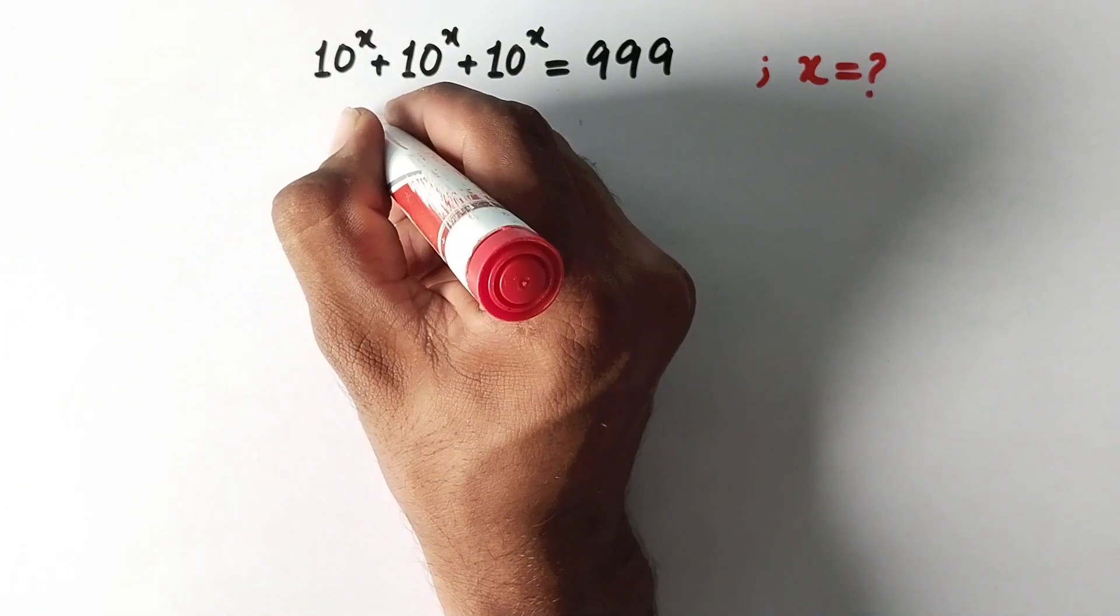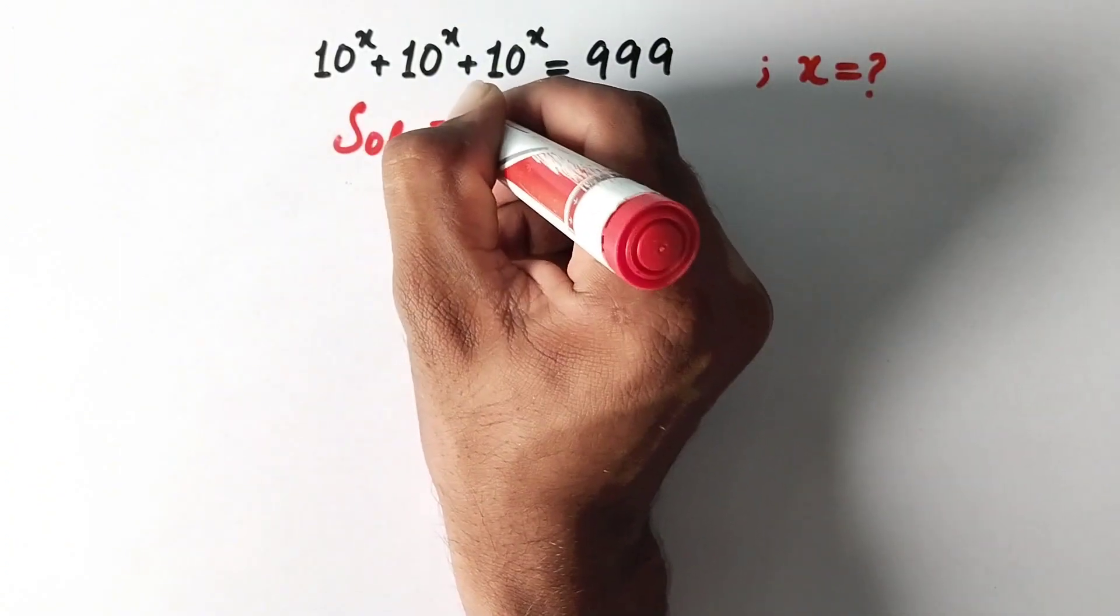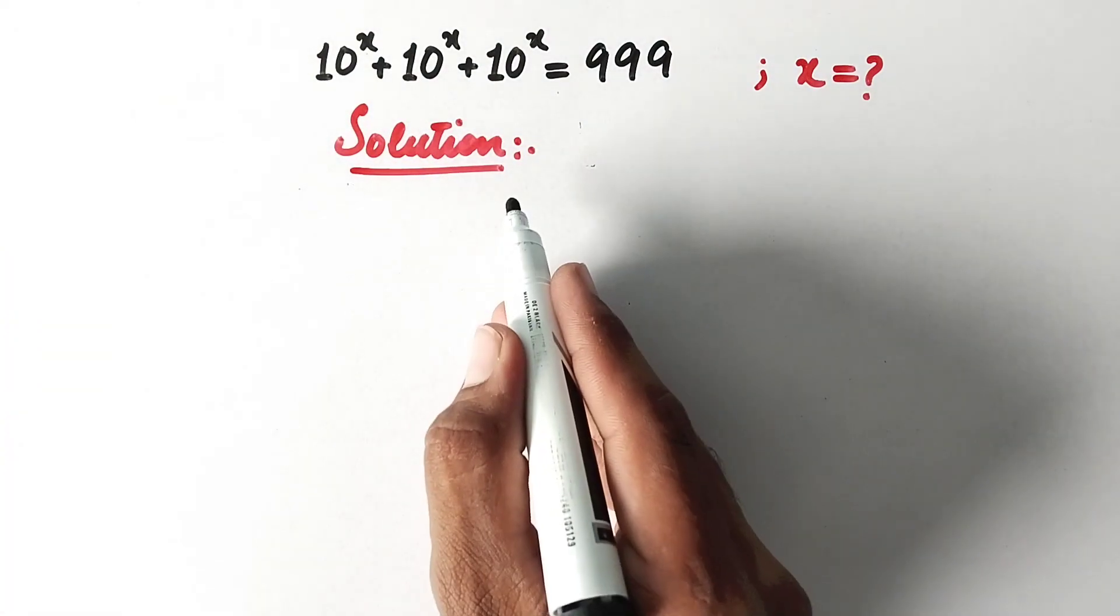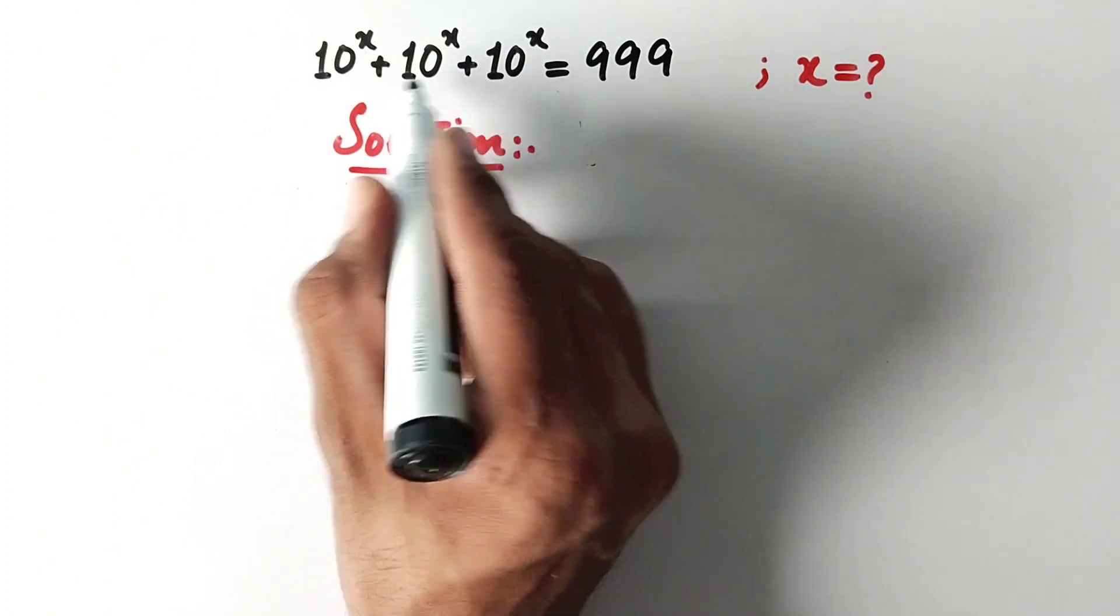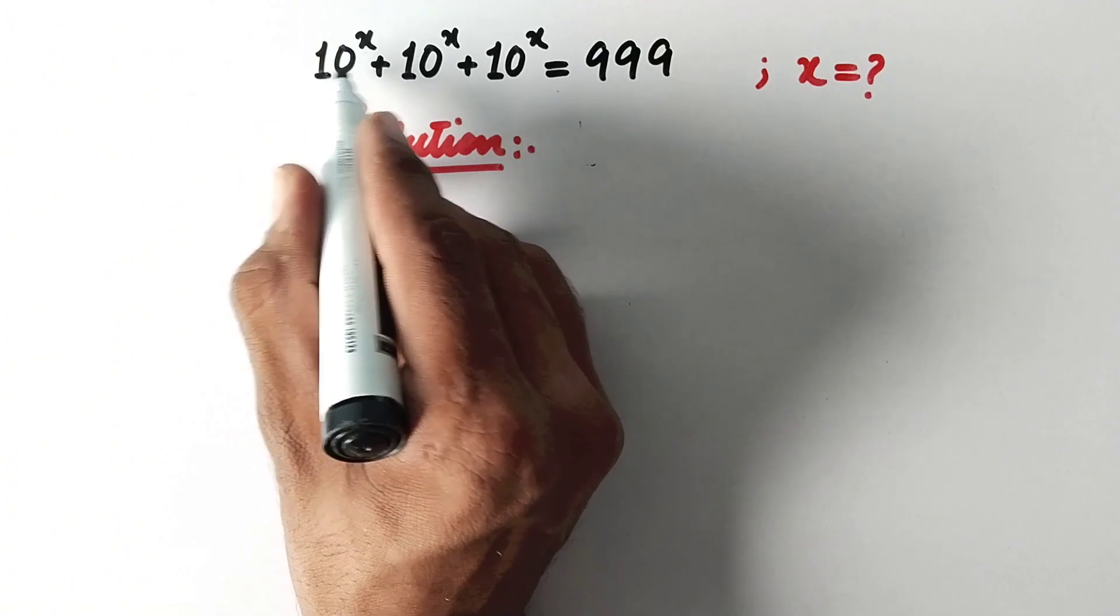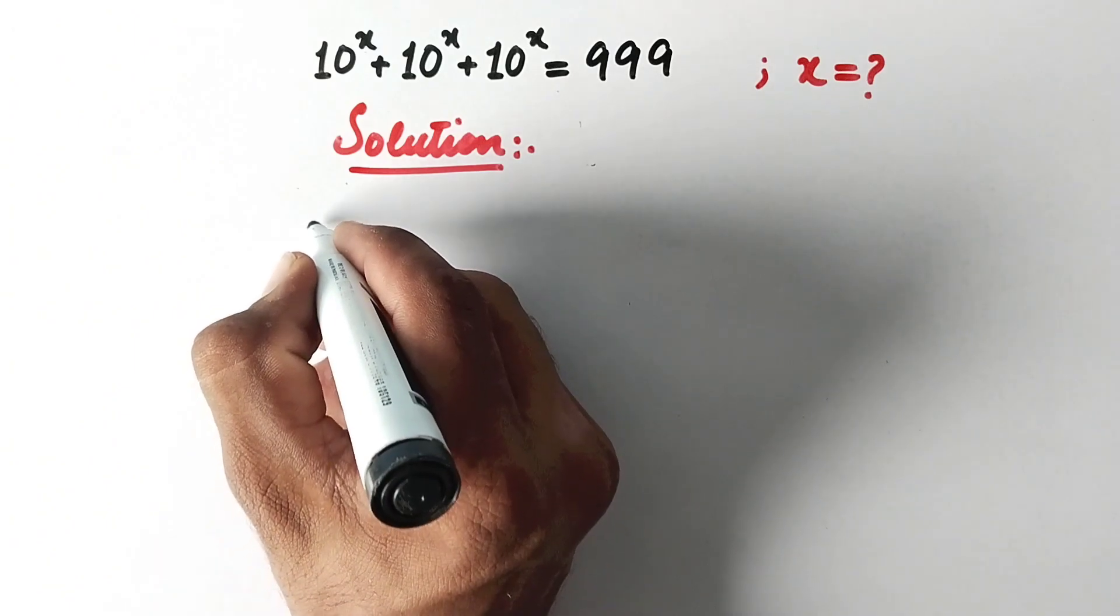Let us see the solution. So here in first step we can write from this left hand side term of equation, we can see that this value is repeating, 10 to power x. So we can take it as a common factor.